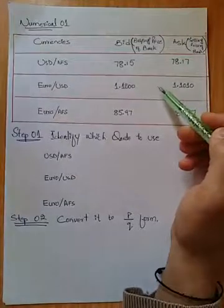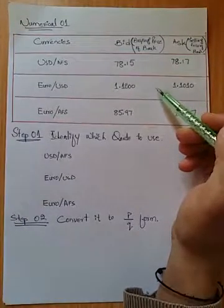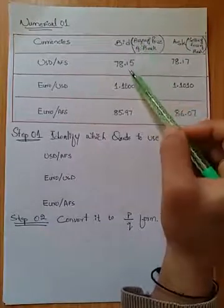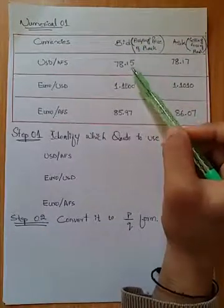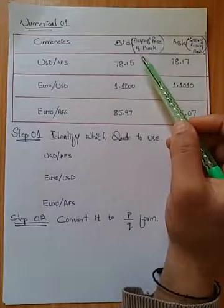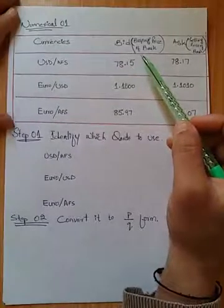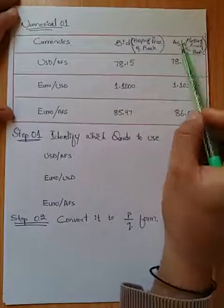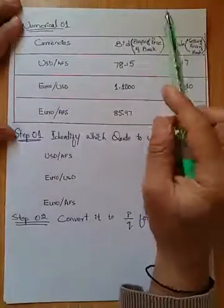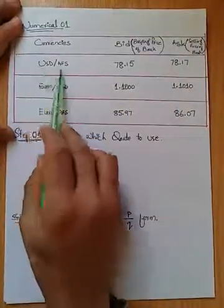When I say bid, it means the banker is buying, and when I say ask, it means the banker is selling. So if I am trying to sell dollars — I am the seller of the dollar, but the bank is buying — then the bank will use the bid rate. But if I go to a bank and say I want to purchase dollars, as a customer I want to buy dollars, but the bank is not buying; the bank is actually selling dollars to me, so they are going to use their selling price.